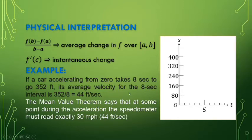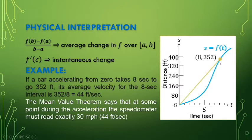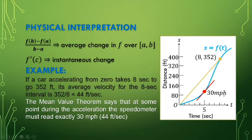For the graph, we have time and distance. We have the curve of the speed, and the secant line from 0 to 8 seconds represents the time traveled. The average speed is that slope, and the instantaneous change — at some point during the trip — the speedometer must have read exactly 30 miles per hour or 44 feet per second.